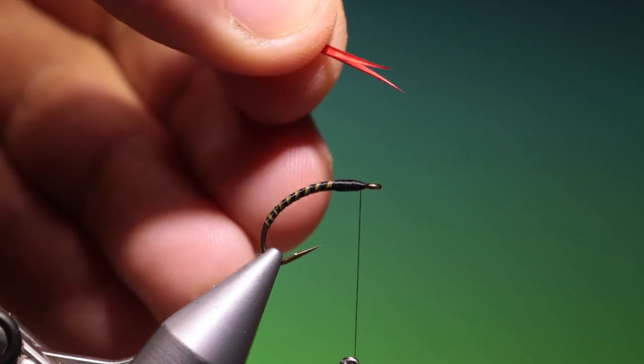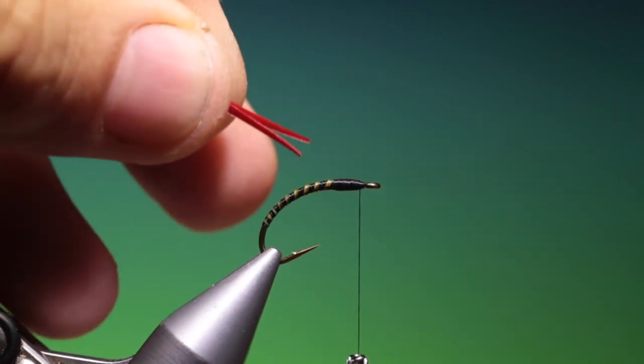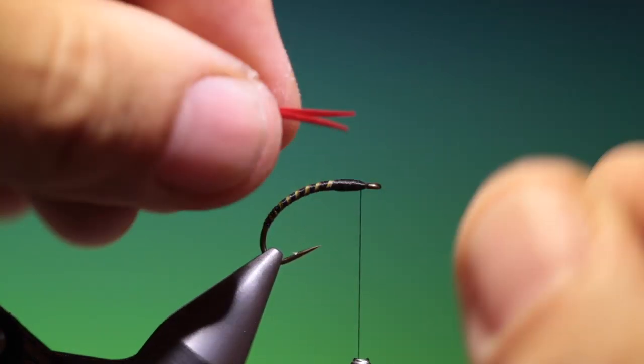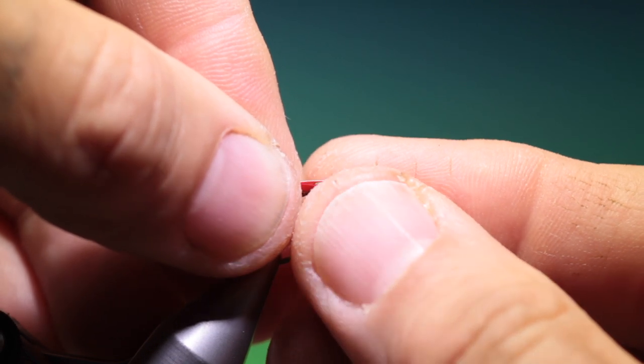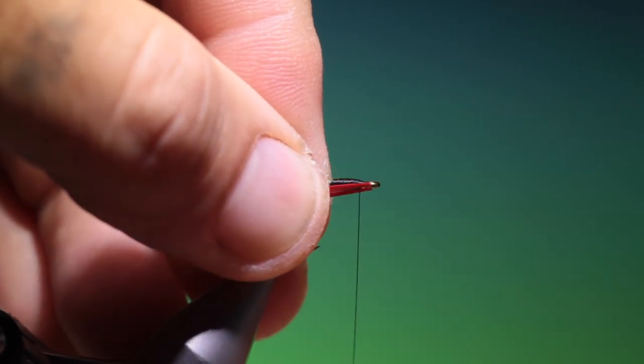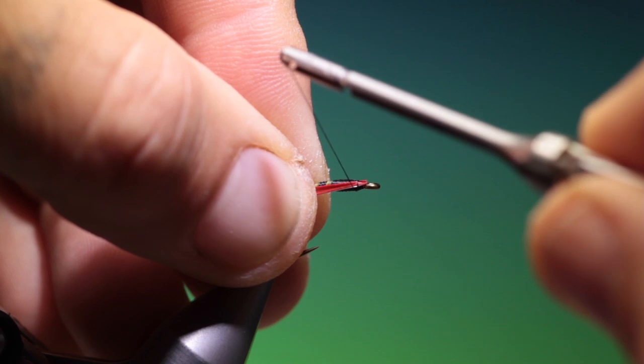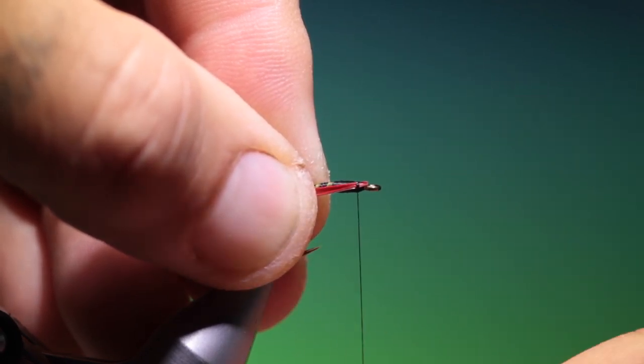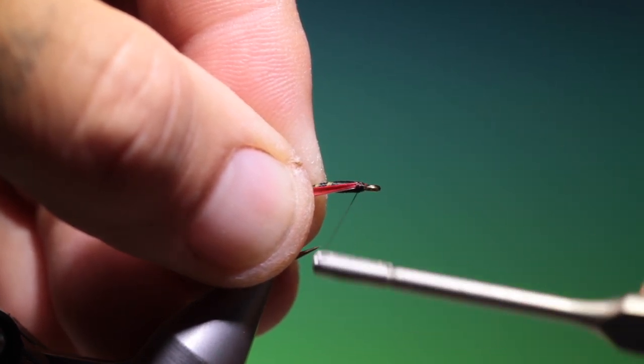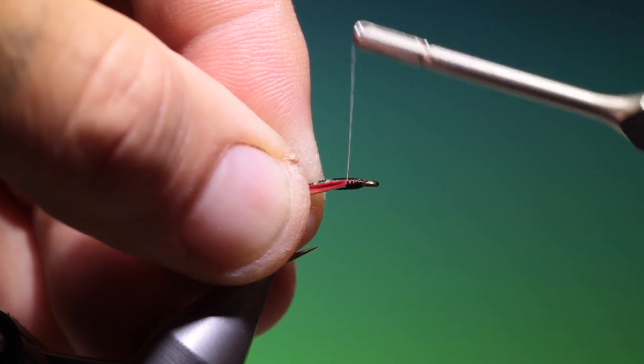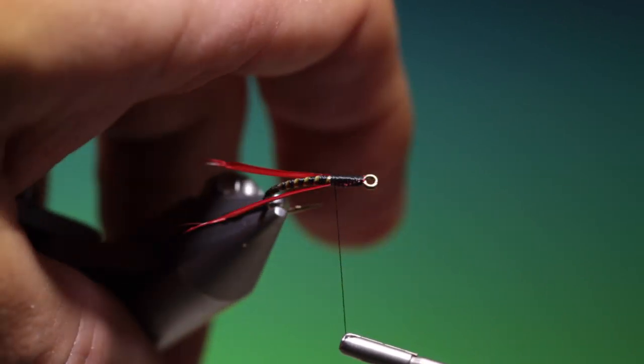Take two goose or turkey biots, and I want to just trim off the ends. Place them together and just tuck these in. Go back.